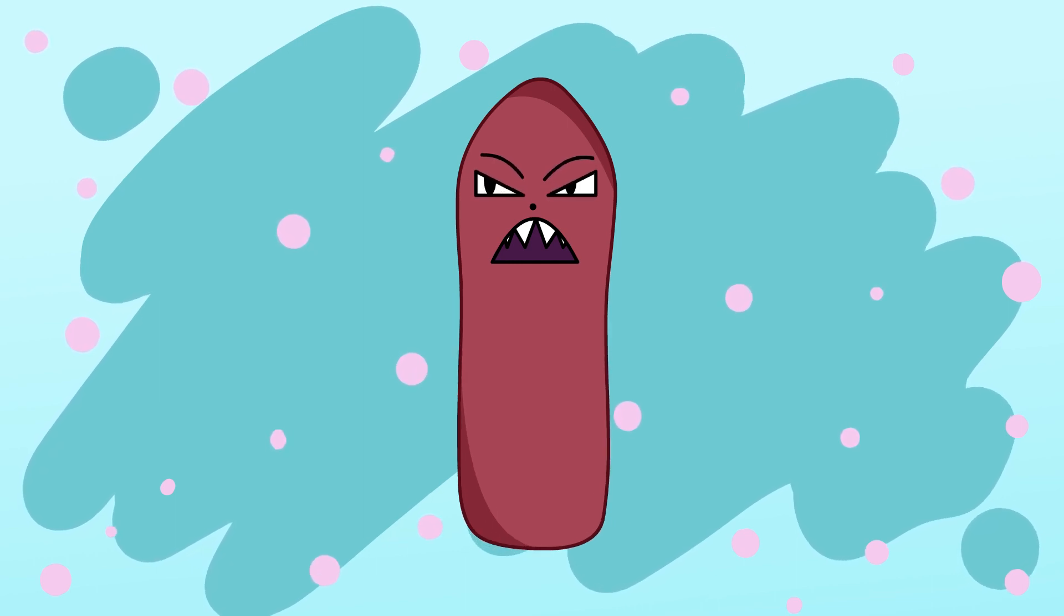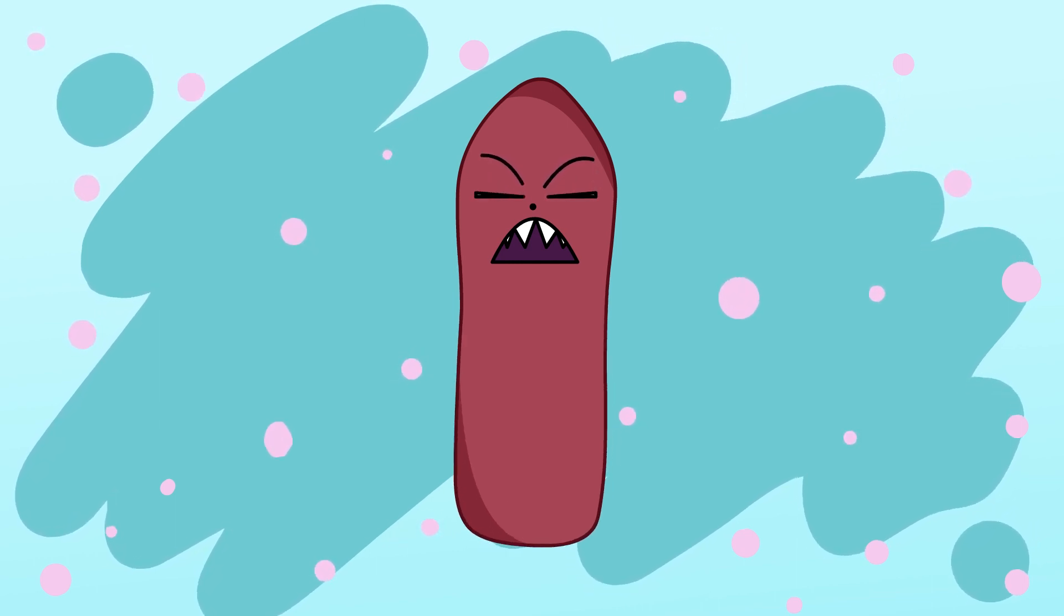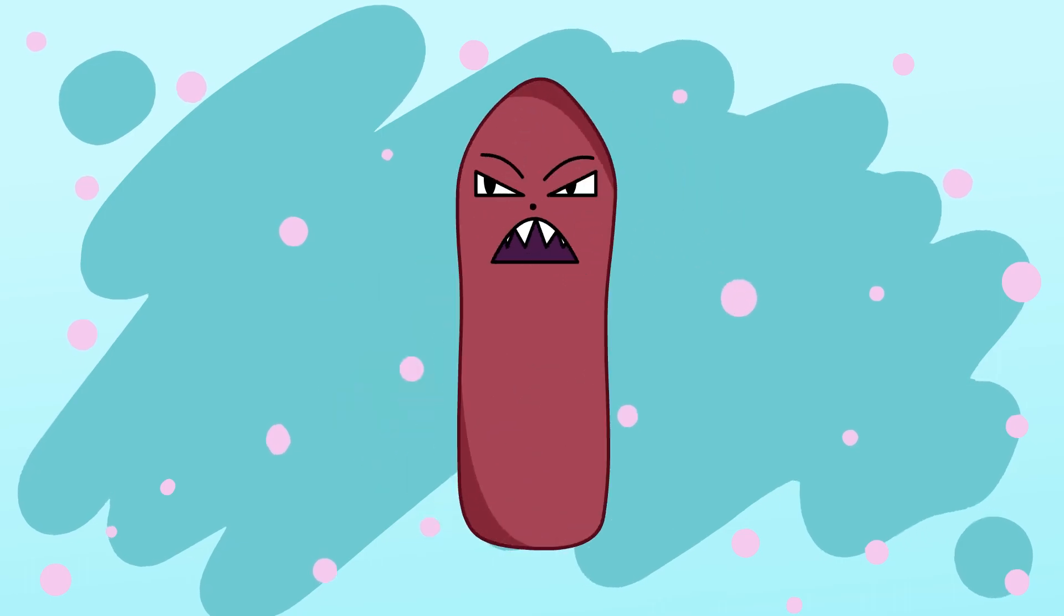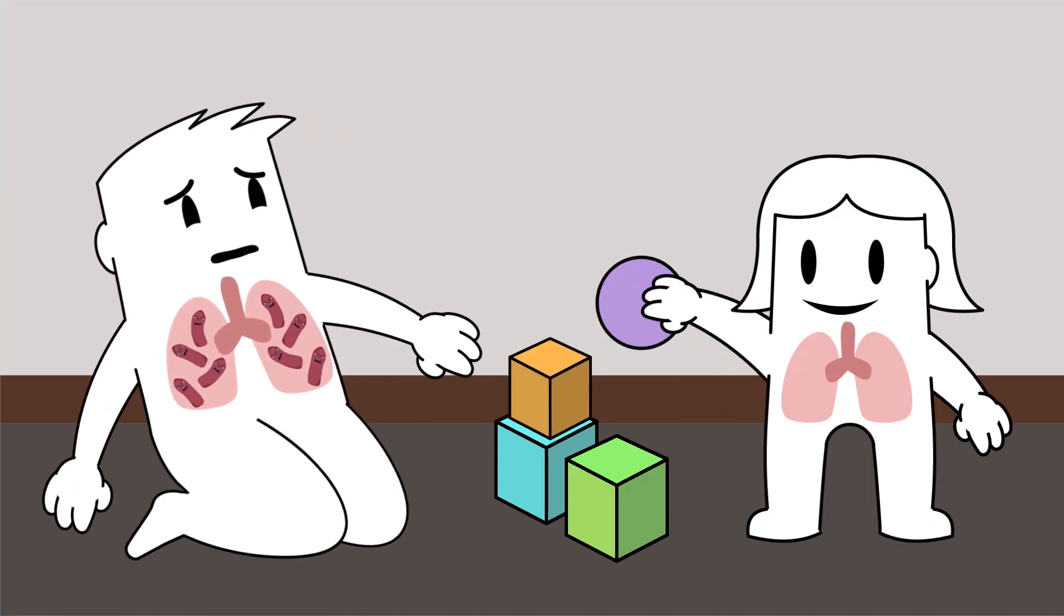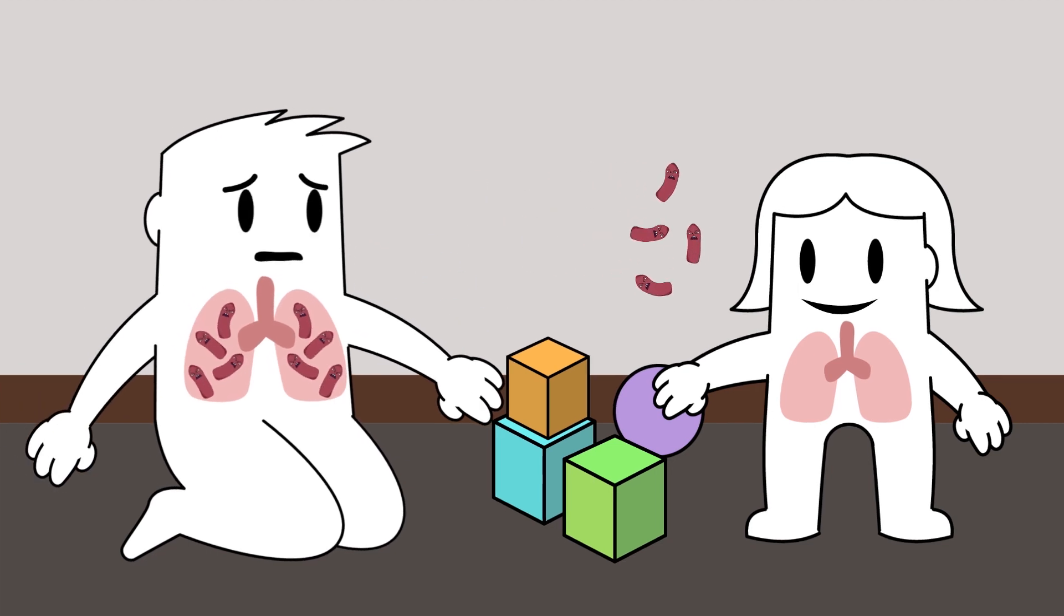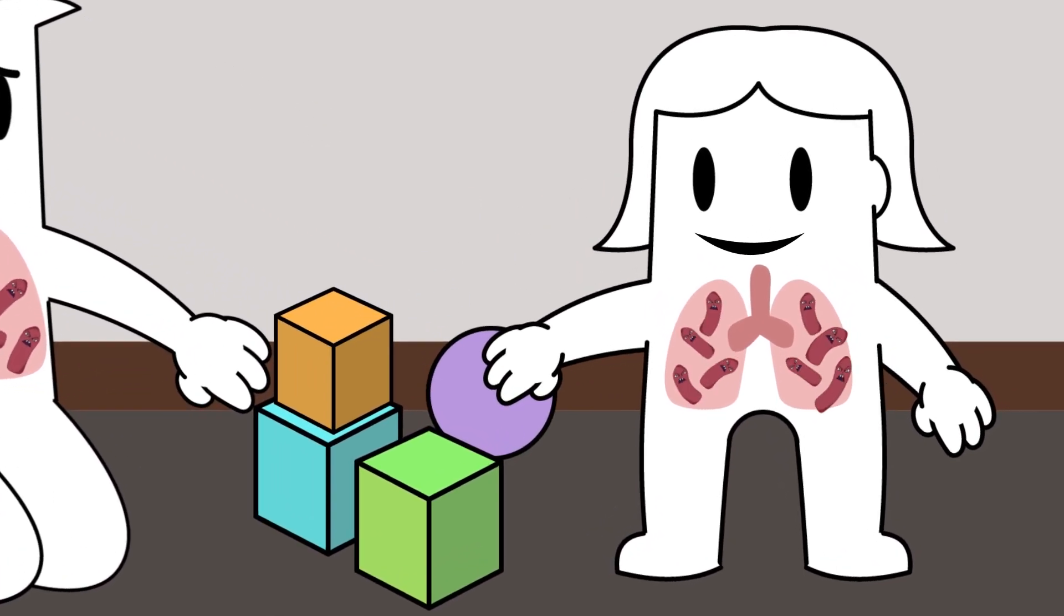TB mainly infects the lungs, but can also infect other organs of the body. Children usually get TB from an adult or older child who is already sick with TB, but not on treatment, who they spend a lot of time with.